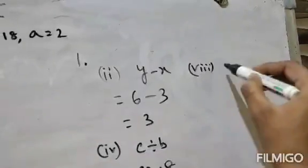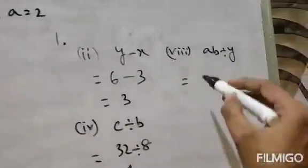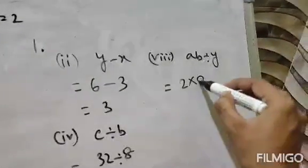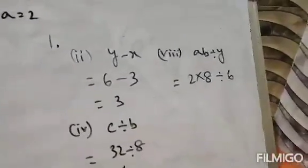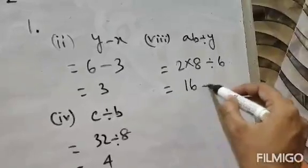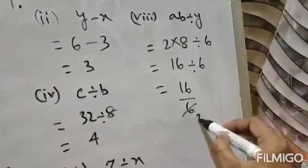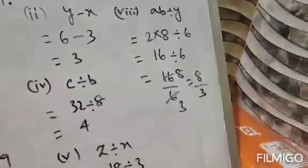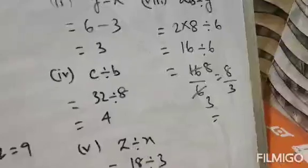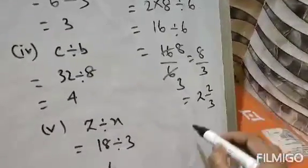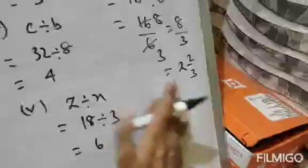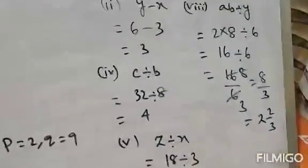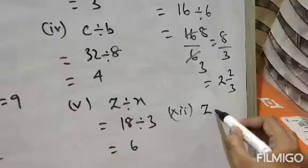Question number 8 is ab divided by y. Here ab means a multiplied by b. Value of a is 2, value of b is 8, so ab = 2×8 = 16. Divided by y which is 6, gives 16/6. Simplifying, that is 8/3, which as a mixed fraction is 2 and 2/3. So the answer is 2⅔.